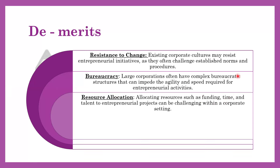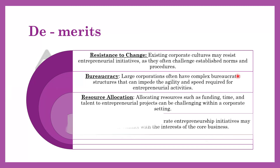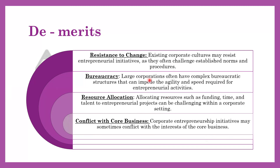Usne tumhe recruit kiya hai apne kaam ke liye — toh uski yeh bhi mentality ho sakti hai ki bhai please yeh sab ghar jaake karo, abhi mera kaam karo. So resource allocation conflicts with the core business. For example, Zomato mein employee Zomato Green ke baare mein soch raha tha. What if he has a completely different idea which is not related to the core business? Sometimes it actually conflicts — pata chala Google ne 20% time toh de diya, but woh Microsoft ke ideas copy kar raha hai — something not relevant to Google. Kabhi kabhi aap apne core business se divert kar jaate ho because of corporate entrepreneurship.